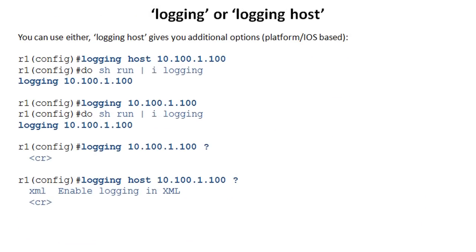This comes up a little bit: is it 'logging' or is it 'logging host'? Do you need to enter 'logging host' followed by the IP address, or can you simply get away with just 'logging' followed by the IP address? The answer is yes — they're both basically the same thing. You can see here I entered 'logging host' followed by the IP address. When I did a 'show run' and included all commands with 'logging' in them, it actually showed up in the running config as just 'logging' and then the IP address. The difference is basically that I believe 'logging' without 'host' is going to be deprecated. When you enter 'logging' and then the IP address and invoke IOS help with the question mark, your only option is to hit return. Whereas if you put in 'logging host', you've got some extra options depending on IOS version and platform. In this case I can specify XML.